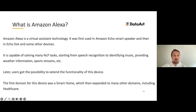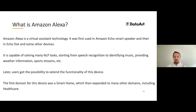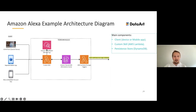We'll start with an overview of what is Amazon Alexa. Alexa is a virtual assistant technology first used in the Amazon Echo smart speaker, and then in Echo Dot and other devices developed by Amazon. It is capable of solving many NLP tasks, starting from speech recognition to identifying music, providing various information, support strings, etc. Later, users got the possibility to extend the functionality of this device. The first domain was smart home, which then expanded to many other domains including healthcare.